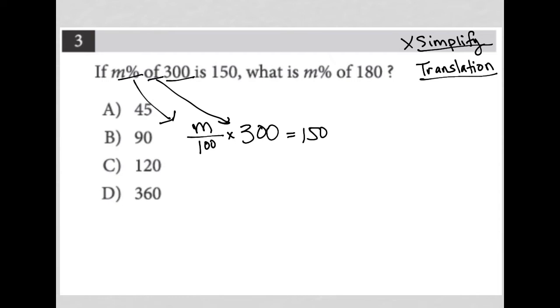I can do that by cross-canceling here, right? That becomes one and three. This becomes 3M equals 150. We divide both sides by three, and I get that M is equal to 50, right? 150 divided by three is 50, which means that M% is 50%.